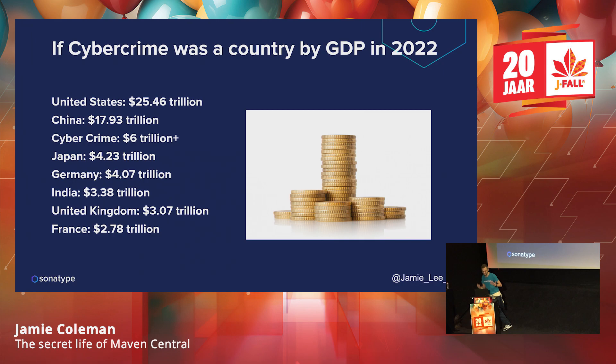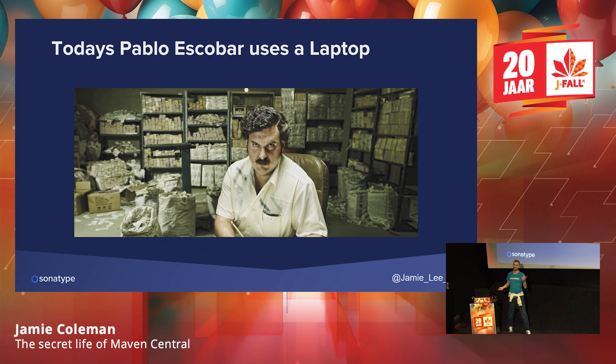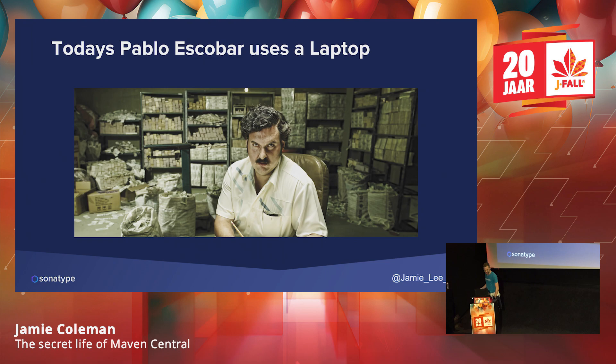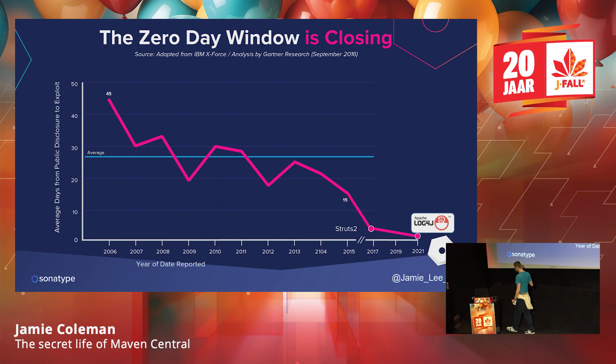Cybercriminals very rarely get caught and they make a lot of money. If a famous criminal were around today, they probably wouldn't bother with drugs — they'd just be a hacker with a room full of hackers taking money from people all over the world. This is more important nowadays. Going back to 2006, when a vulnerability was announced we had on average about 45 days to fix it before a hacker would start attacking. What we learned with Log4j is that window is now down to one or two days.